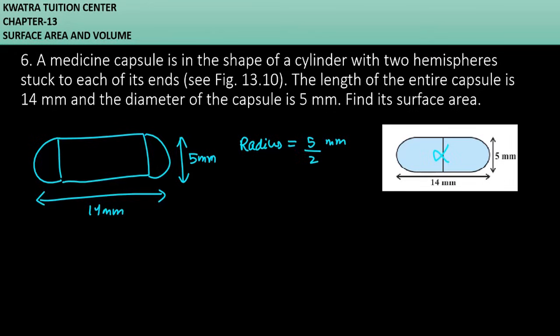Now to find the surface area, we need the height of the cylinder. If we look at the radius, this part and this part are the radius. So the height of the cylinder will be 14 minus 5 by 2 minus 5 by 2, which gives us 9 mm. The cylinder's height is 9 mm.